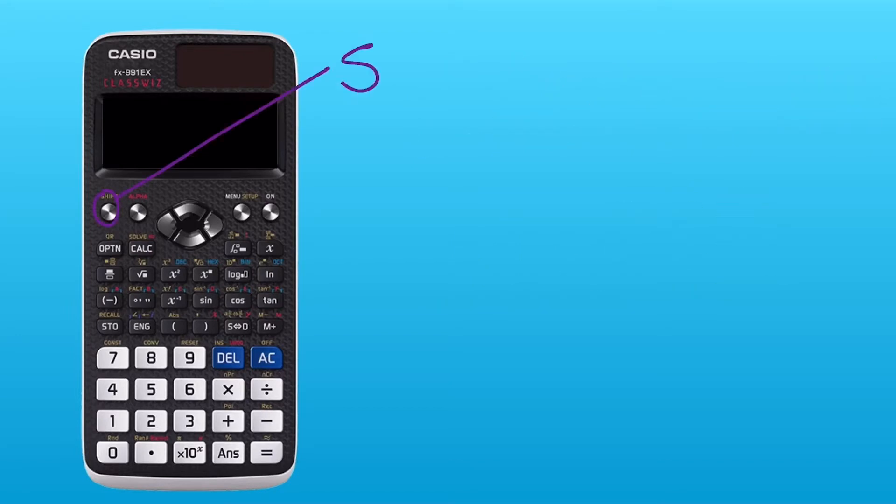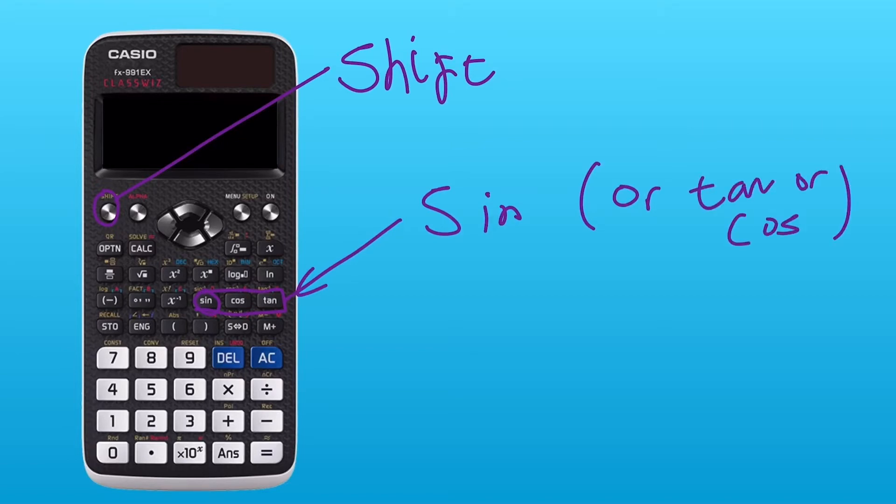And to find the inverse sine, tan, or cos, you use the shift button usually, then sine, then tan, or cos.